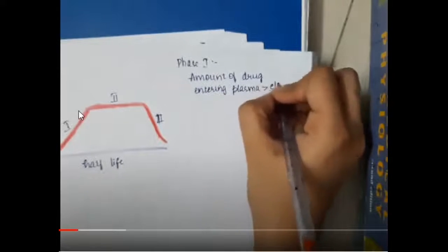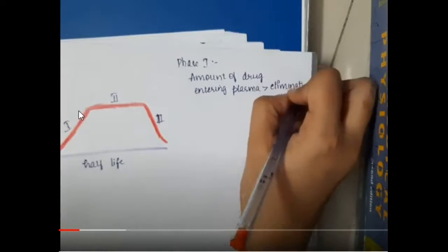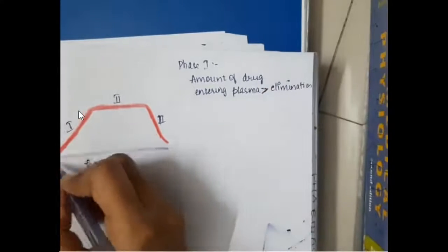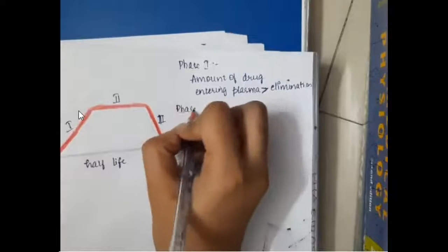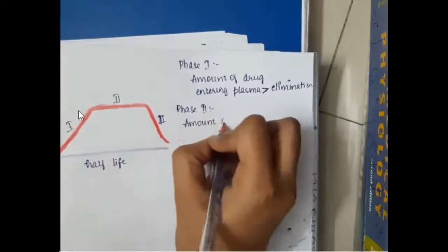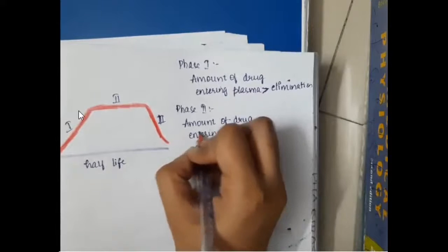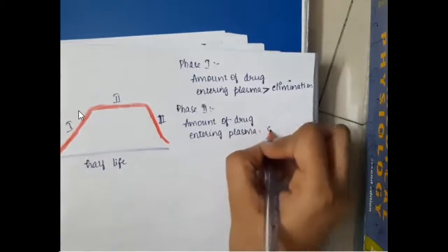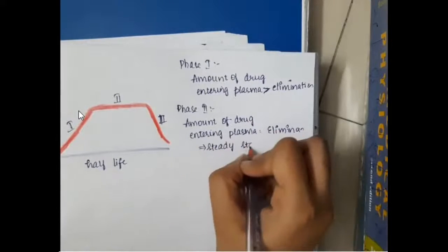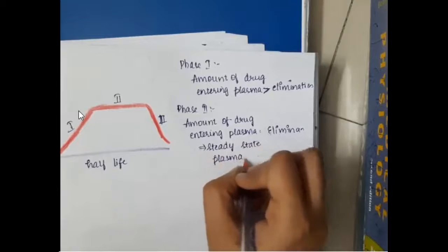Phase one is the upslope where the amount of drug entering the plasma is more than the elimination. In phase two, the amount of drug entering the plasma is equal to the elimination of the drug, which is the steady-state plasma concentration.